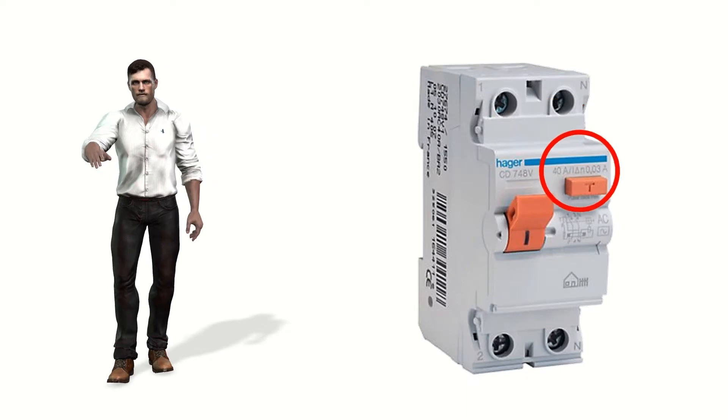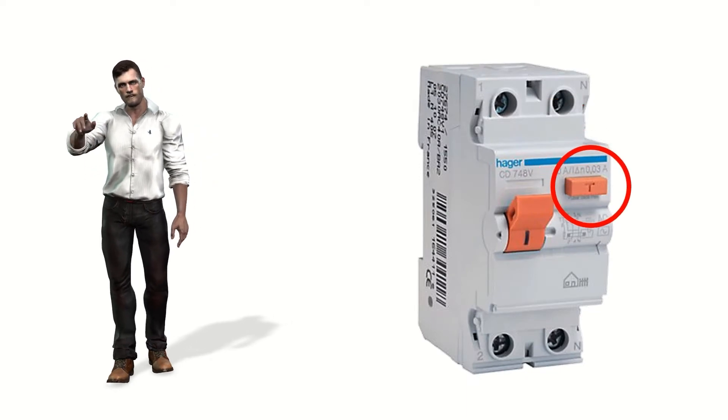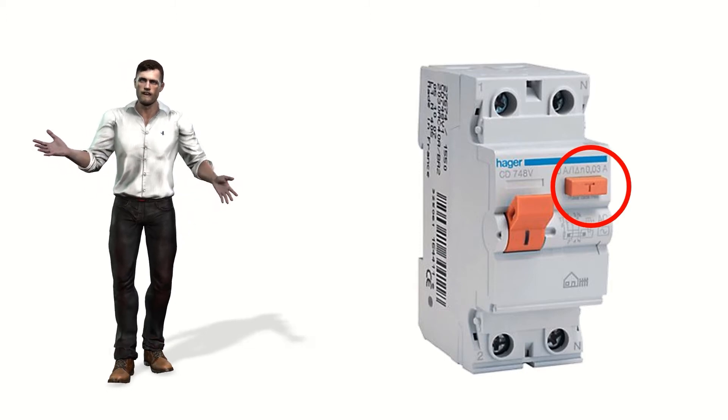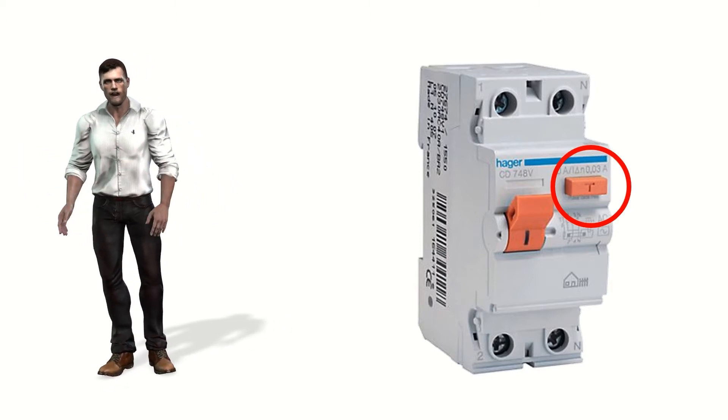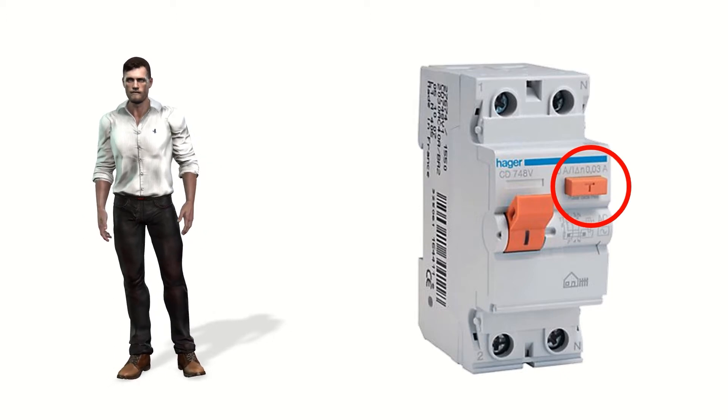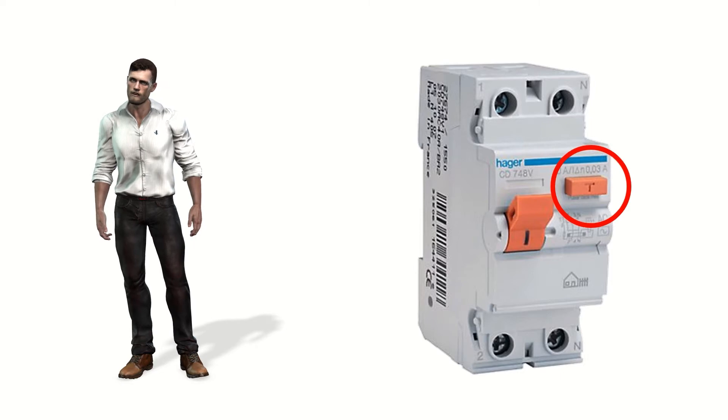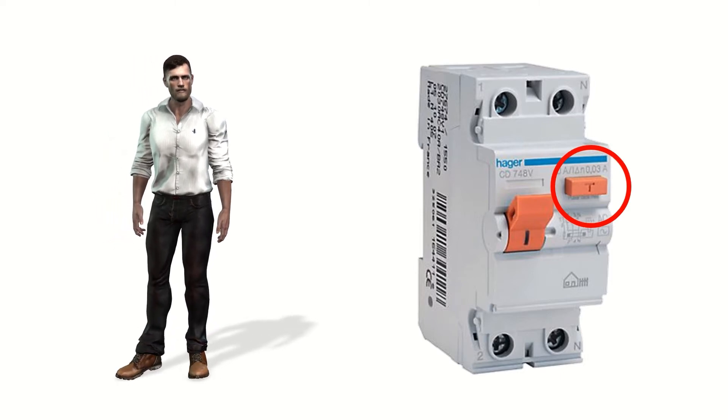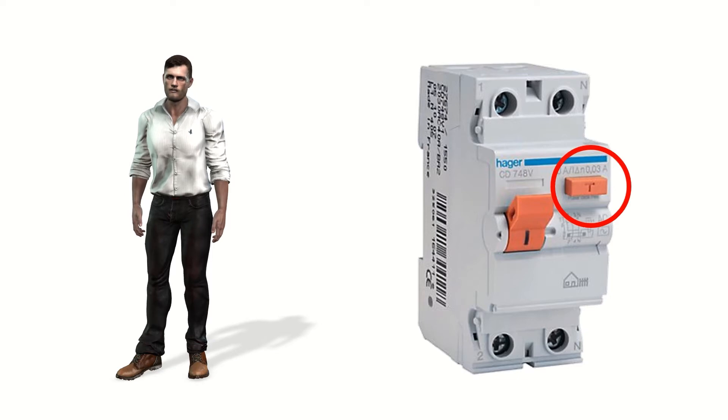As we see in the image, the differential protections or RCD usually incorporate a test button. This test button connects a resistance between phase and neutral outside the toroid, simulating a known leakage current, enough to activate the differential protection. Although this test is a help to know if the residual current device is capable of being activated, it is not enough to determine if that differential protection really works correctly.